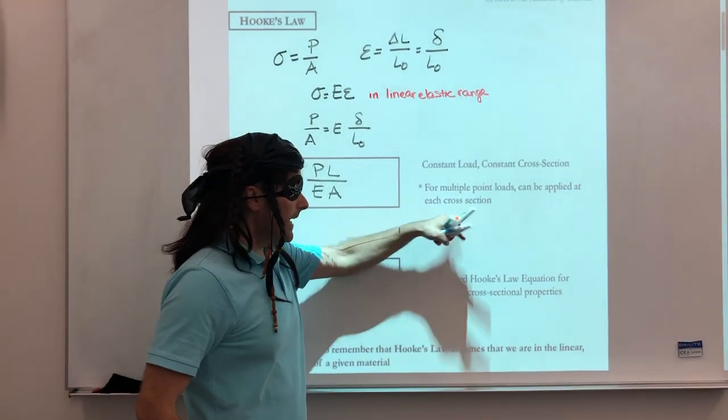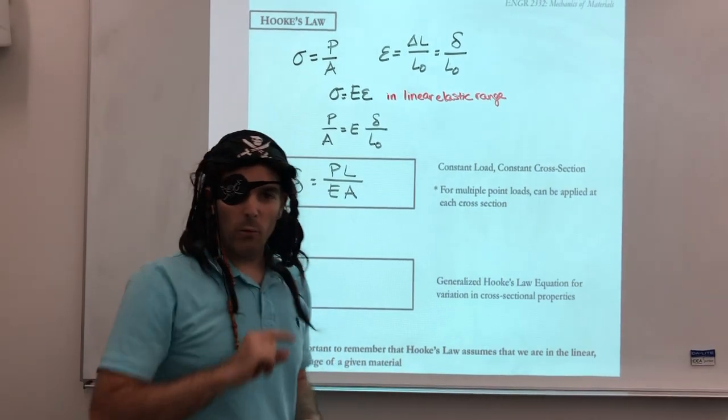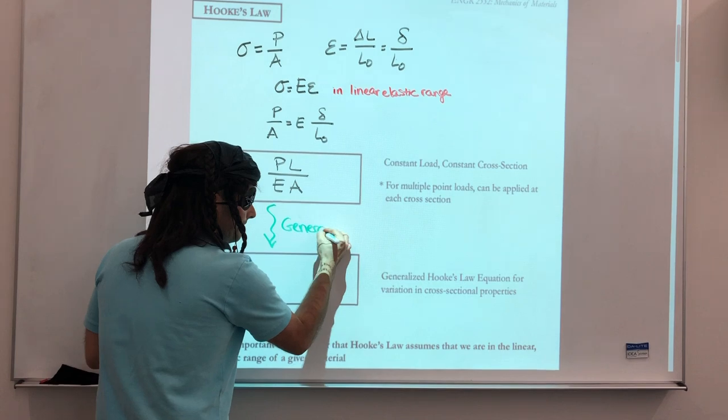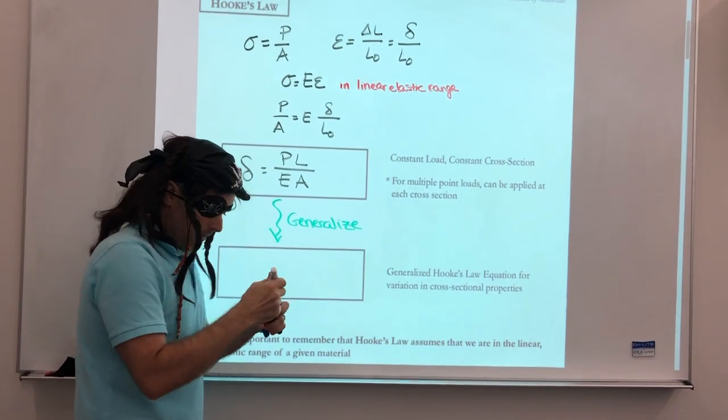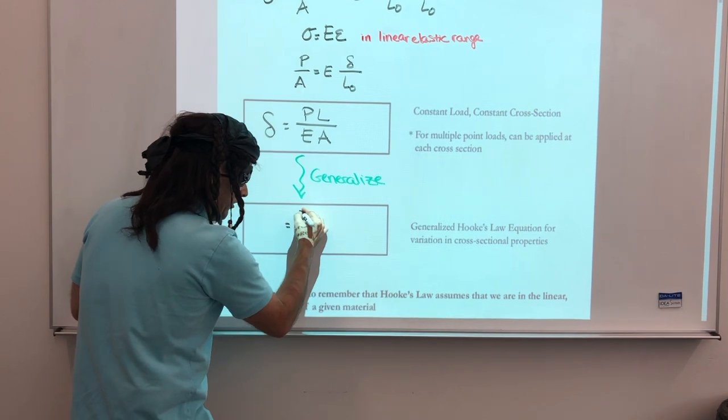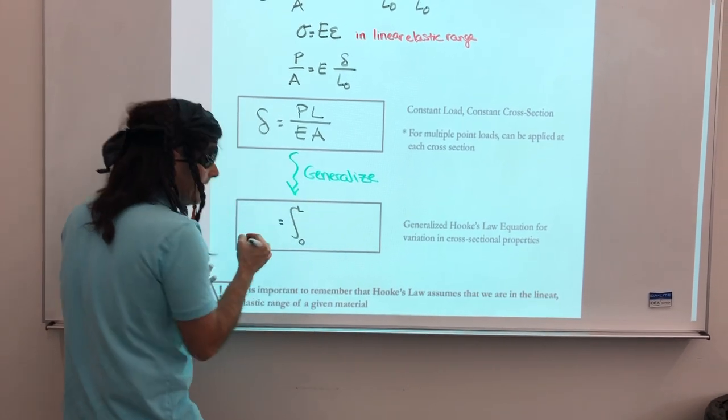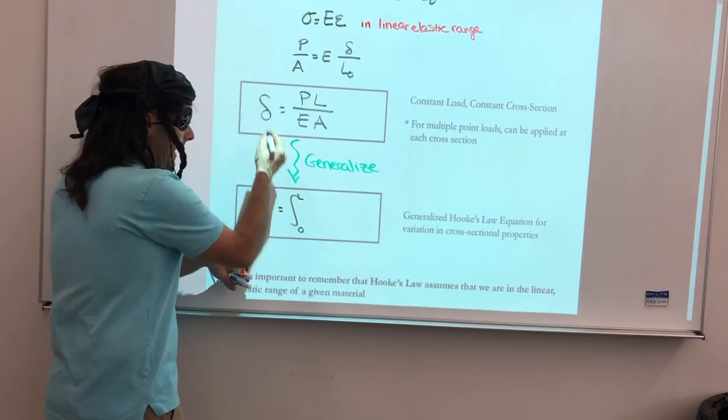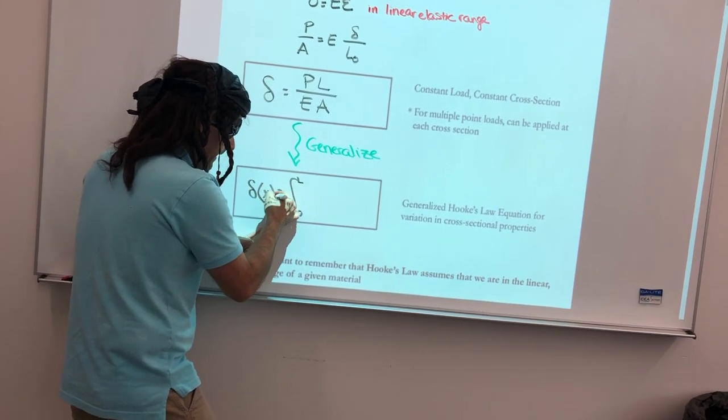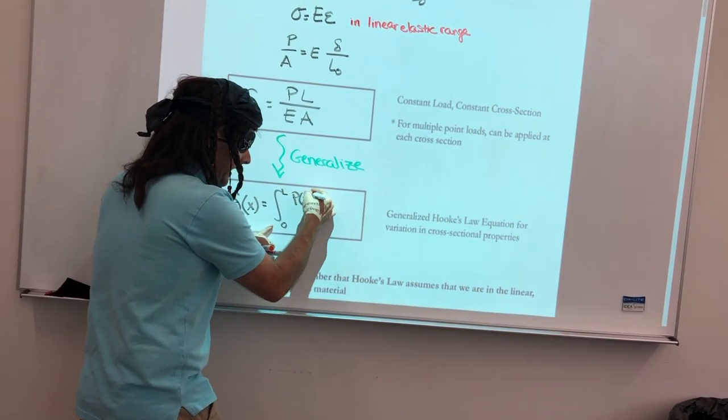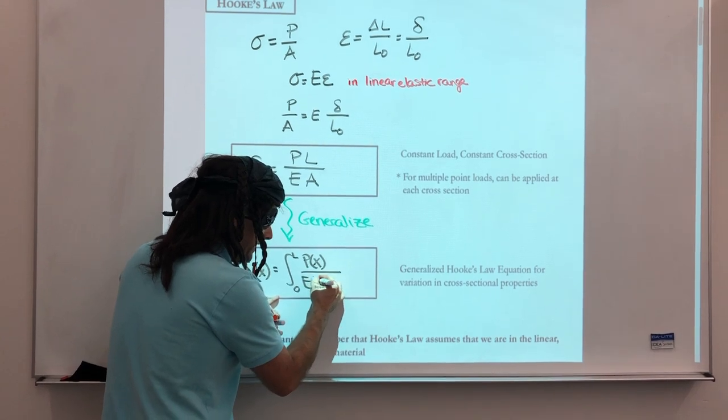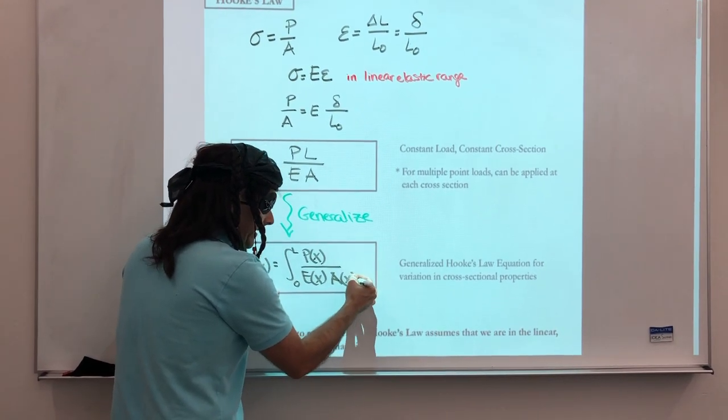This works for a constant load and constant cross-section. But we said in our learning objectives that we wish to generalize this for any given case. So we can write from this, we can just write this as an integral. Now we're going to replace this with an integral, and we're going to integrate along the length of the member. Then we could say that delta at any given point can be defined as the integral of a function of the load over the length divided by E, and our modulus can vary across the length, and our area can vary across the length.